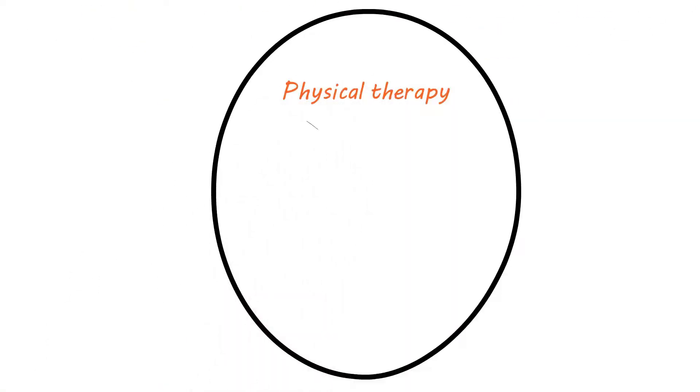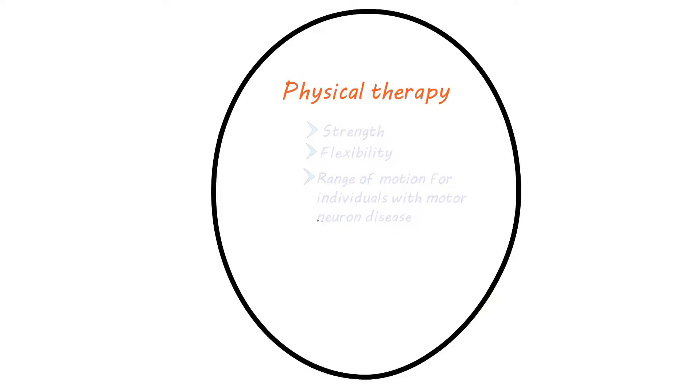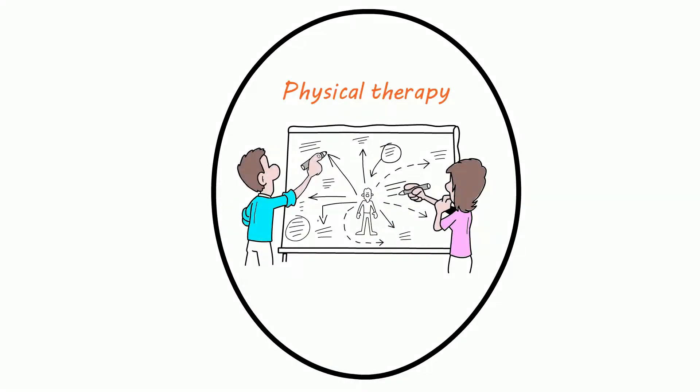Physical Therapy. Physical therapy can help to improve strength, flexibility, and range of motion for individuals with motor neuron disease. A physical therapist can develop a personalized exercise program that targets specific areas of weakness or atrophy.